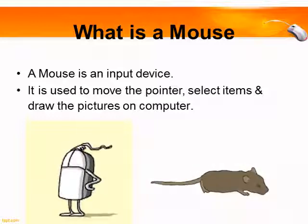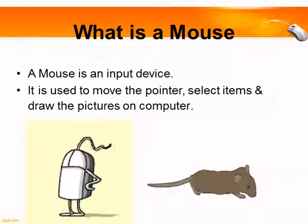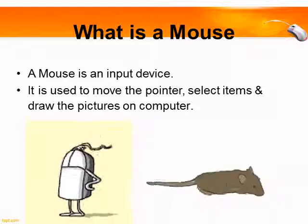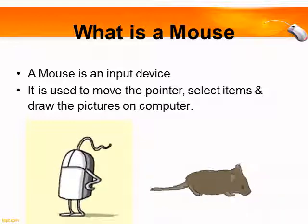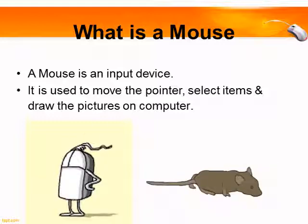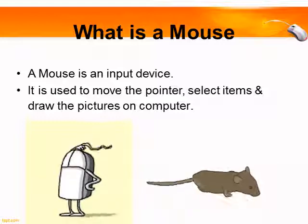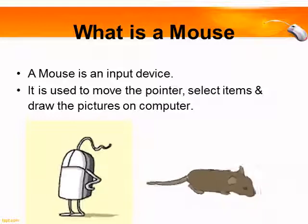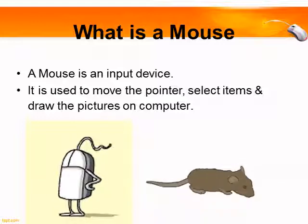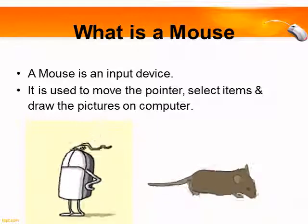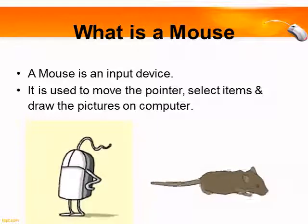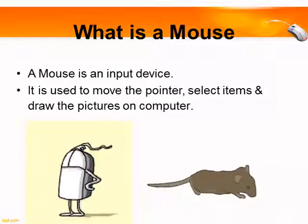A mouse has two buttons. It is small in size and has a wire like a tail, which is attached to the CPU. The left button is used for left click and the right button is used for right click. A mouse helps us to move the pointer, select items, and draw pictures on the computer screen.